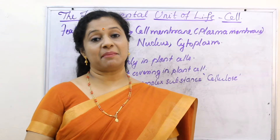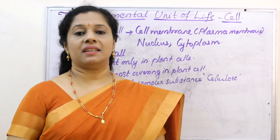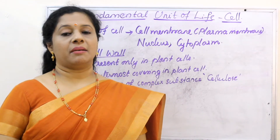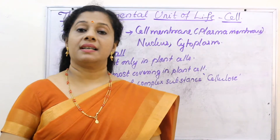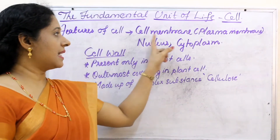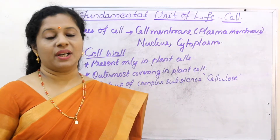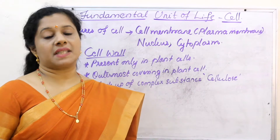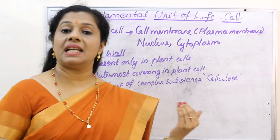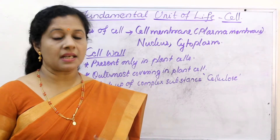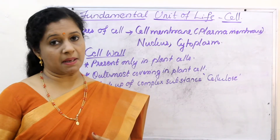We are learning the chapter 'The Fundamental Unit of Life', that is the cell. In the previous videos we learned the discovery of cell and about its features — cell membrane or plasma membrane, nucleus, and cytoplasm. We discussed in detail the characteristics of cell membrane, why it is called a selectively permeable membrane, the processes by which substances move in and out of the cell — diffusion and osmosis — and also the significance of osmosis, endocytosis, and the composition of the plasma membrane.